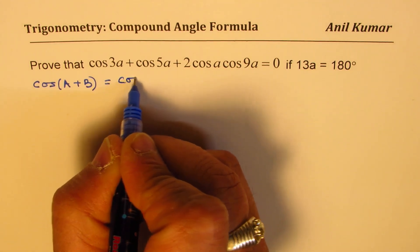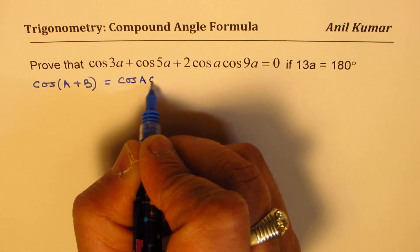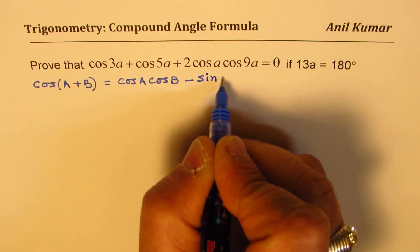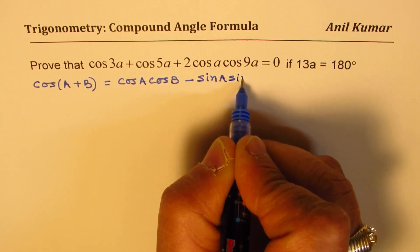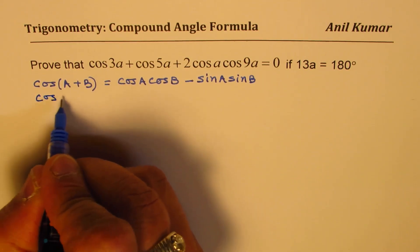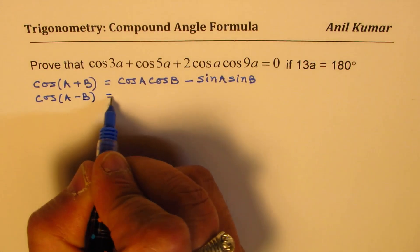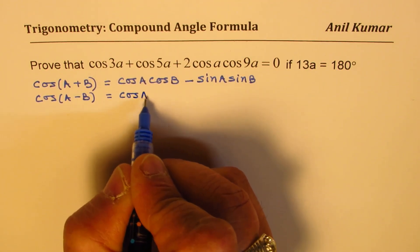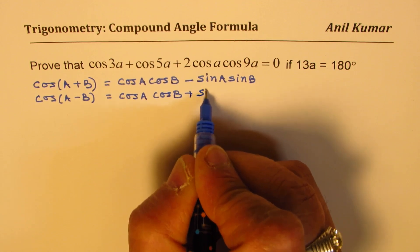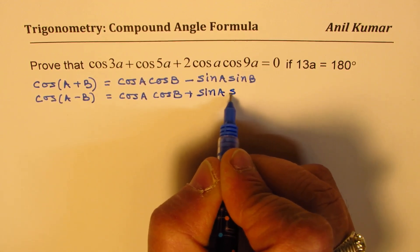which is equal to cos A cos B minus sin A sin B. And if we have cos of A minus B then in that case it is equal to cos A cos B plus sin A sin B.